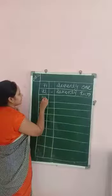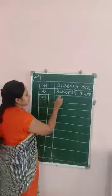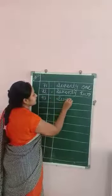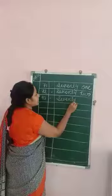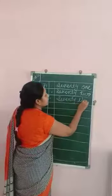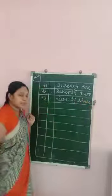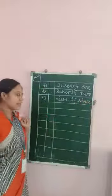7, 3 — 73. S, E, V, E, N, T, Y — 70. T, H, R, E, E — 73.